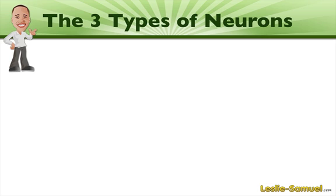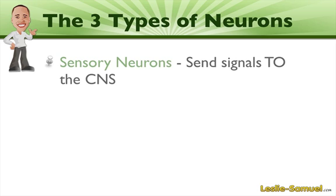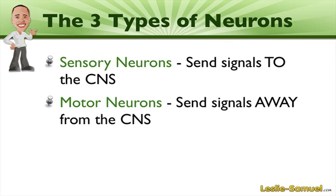There are three main types of neurons. First we have sensory neurons and these are neurons that send signals to the central nervous system. And if you remember from the previous episode, the central nervous system is made up of the brain and spinal cord. Then we have motor neurons that send signals away from the central nervous system and to other organs and muscles and tissues and glands and so on.